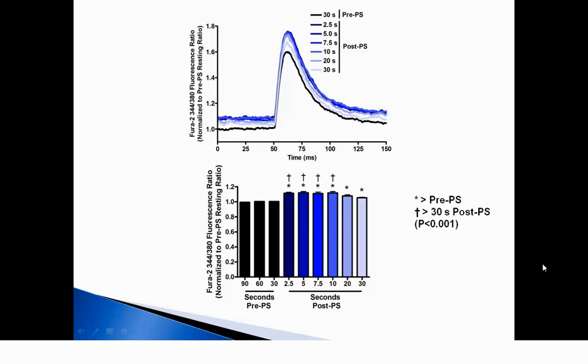Thus, we have a putative mechanism for potentiation in the absence of myosin regulatory light chain phosphorylation. Namely, contractile activity causes an increase in cytosolic calcium subthreshold for force production, which can contribute to isometric twitch force potentiation. This effect is reversed when cytosolic calcium is returned to homeostatic levels.